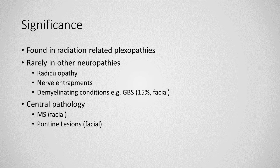It can rarely be seen in other types of neuropathy such as radiculopathy, nerve entrapments including carpal tunnel lesions, and even demyelinating conditions. It is quite common in Guillain-Barré syndrome at about 15%, and usually these are facial. They can also occur from more central pathology, for example in multiple sclerosis and also in pontine lesions.